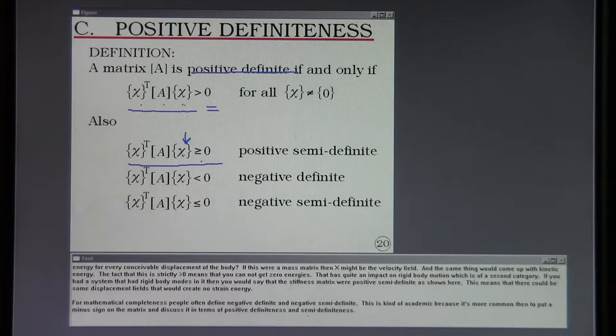For mathematical completeness, people often define negative definite and negative semi-definite. This is kind of academic because it's more common to put a minus sign on the matrix and discuss it in terms of positive definiteness and semi-definiteness.